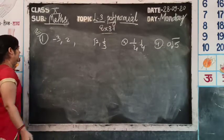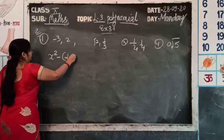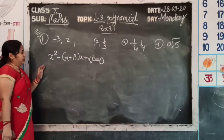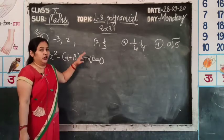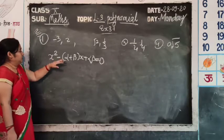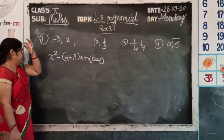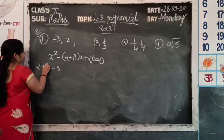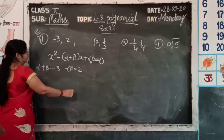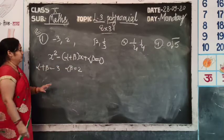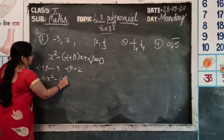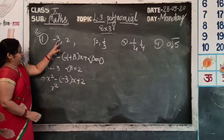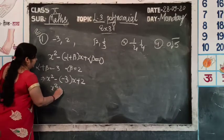There is a formula: x² - (alpha + beta)x + alpha × beta = 0. This is the short trick. For the first number, sum of zeros alpha + beta = -3, product alpha × beta = 2. So the polynomial is: x² - (-3)x + 2 = x² + 3x + 2.